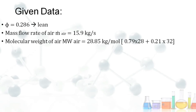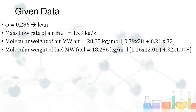The molecular weight of air is calculated using 79% nitrogen and 21% oxygen by volume: (0.79 × 28) + (0.21 × 32) = 28.85 kg/mol. Similarly, the molecular weight of fuel C₁.₁₆H₄.₃₂ is calculated using MW_carbon = 12 and MW_hydrogen = 1.008.